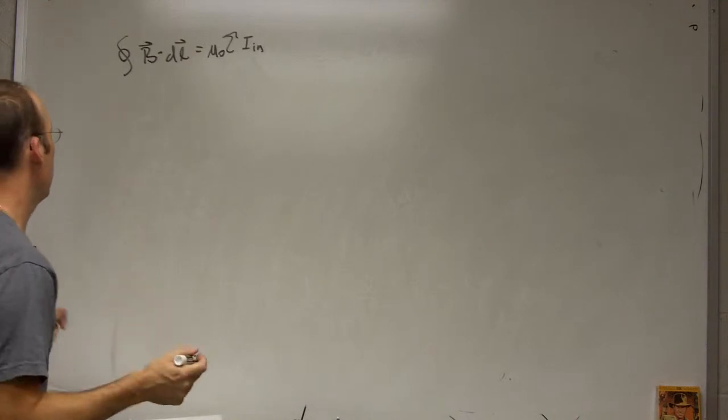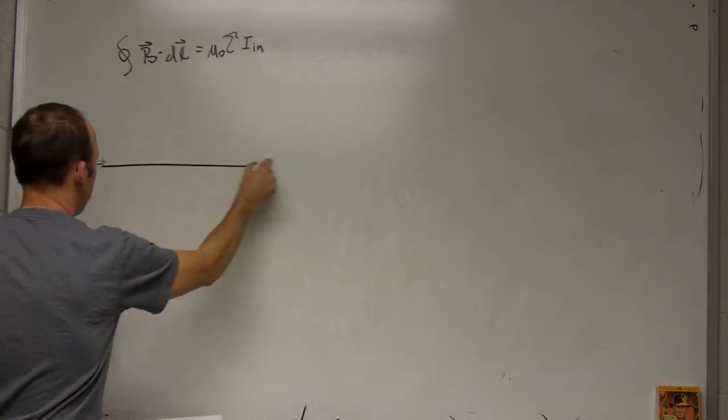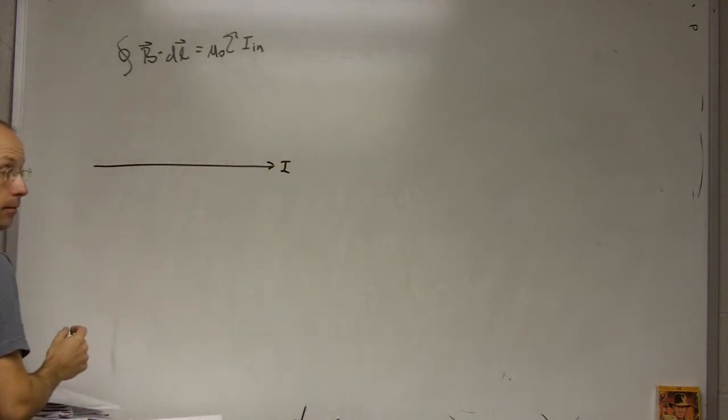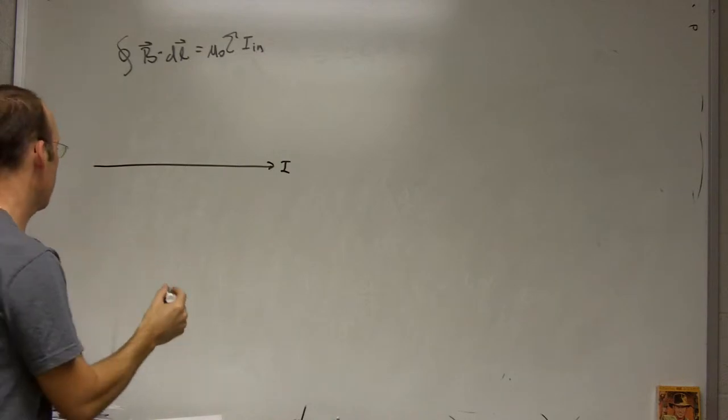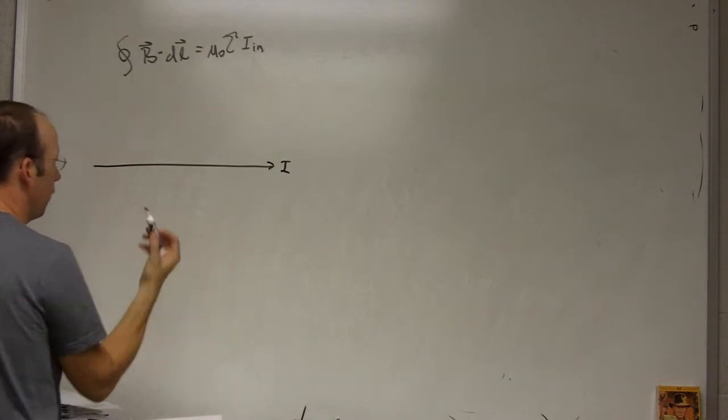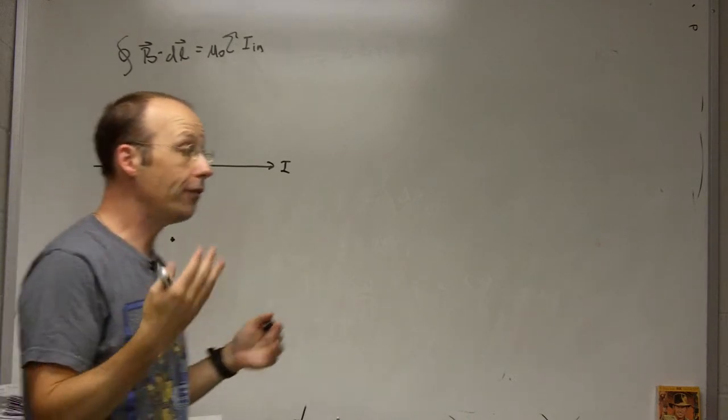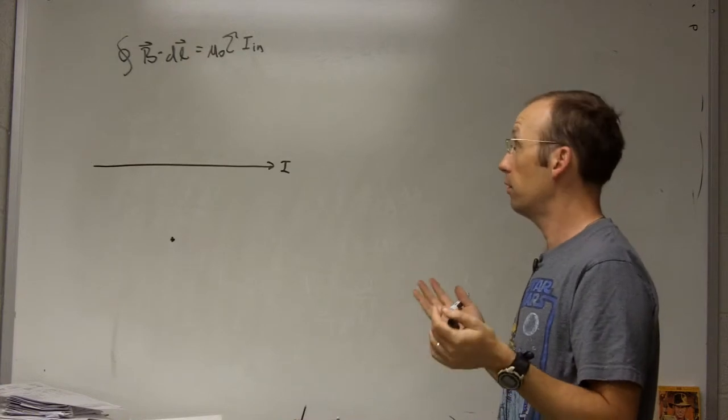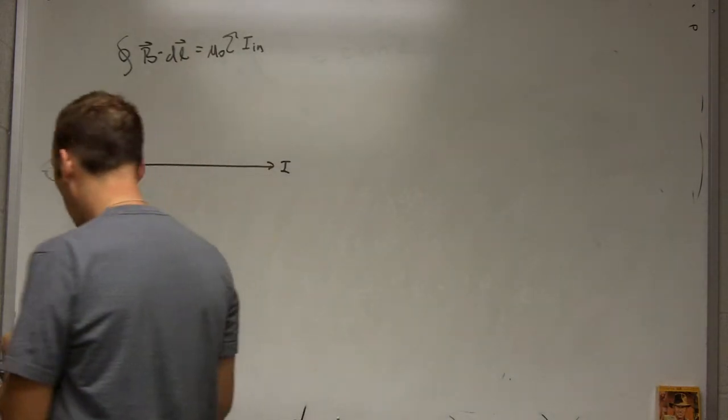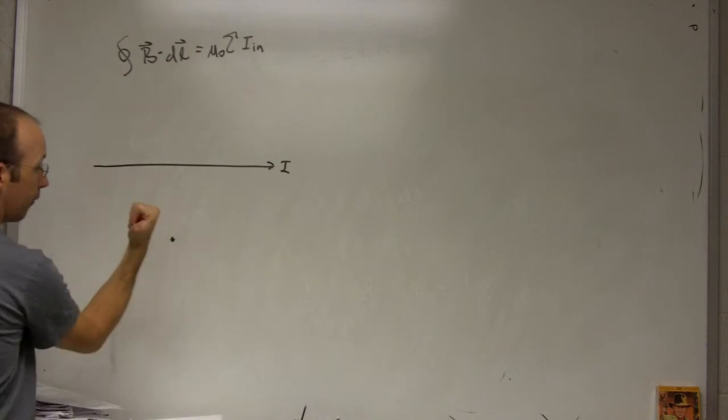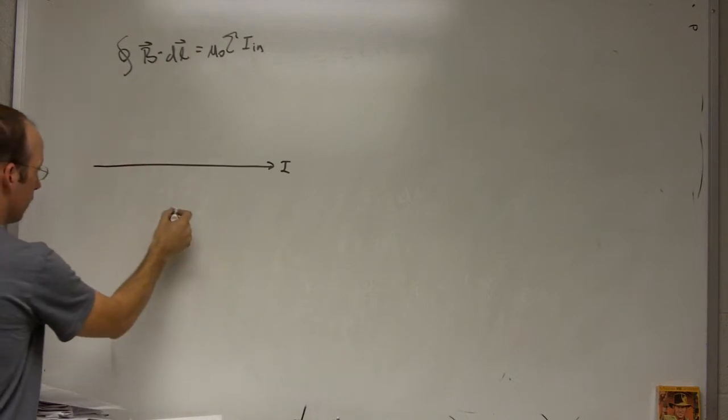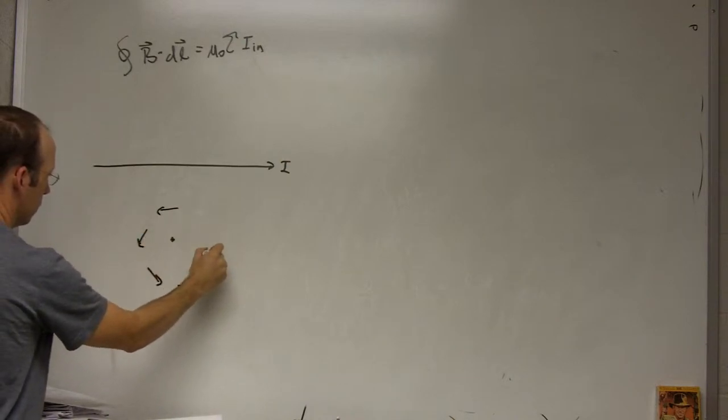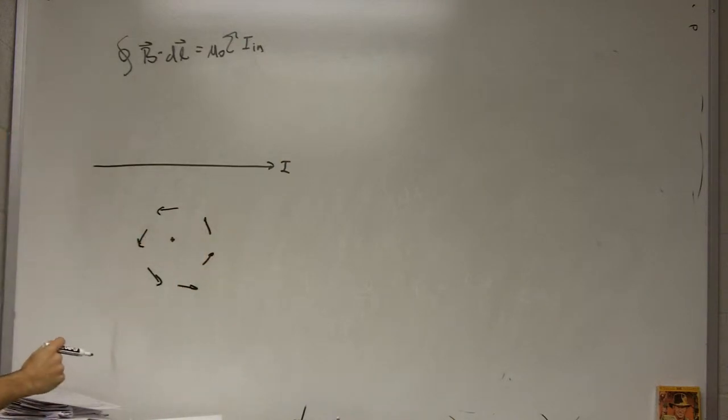So let's use this to find the magnetic field due to a long straight wire of current, which we already know. So here's my current I going like that. Again, let me draw it coming out of the board. There's a current coming out of the board. We have to know something about the shape of the pattern of the field in order to use this effectively. So we already know that if I have current coming out, the magnetic field is going to make this circular type pattern like that. That's going to be B.